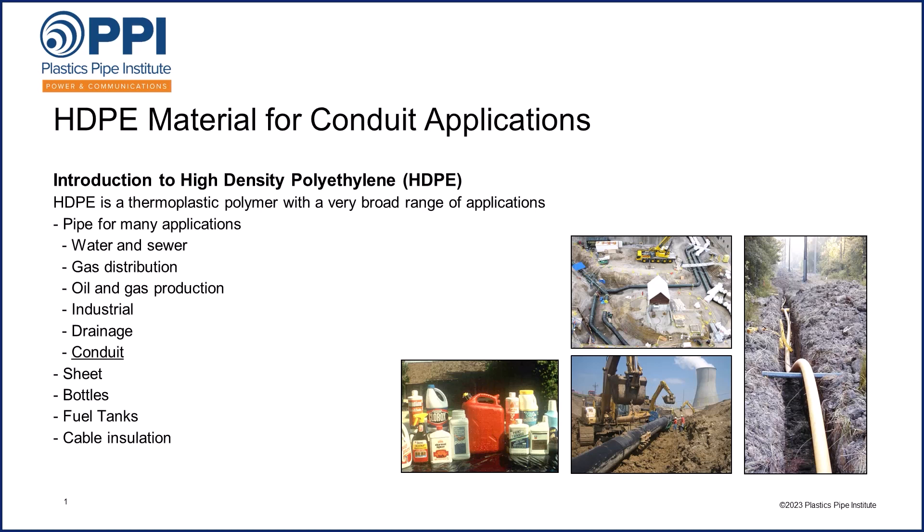High-density polyethylene is a thermoplastic polymer with a very broad range of applications. It can be used for pipe for many different types of applications — from water and sewer, to gas, to oil and gas production, to industrial drainage, and of course conduit. It can be produced in sheet form, molded into bottles, fuel tanks, and even used as cable insulation — and that's just a few examples of its wide range of applications.